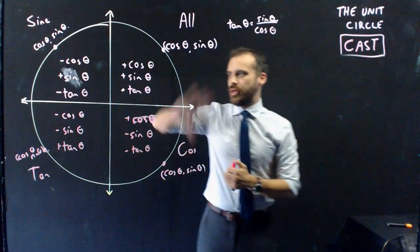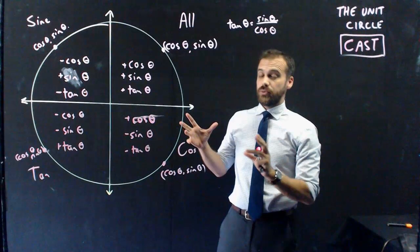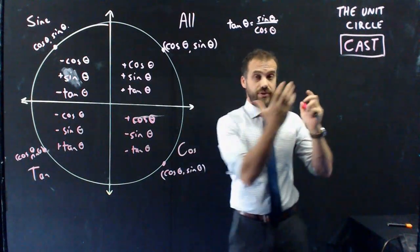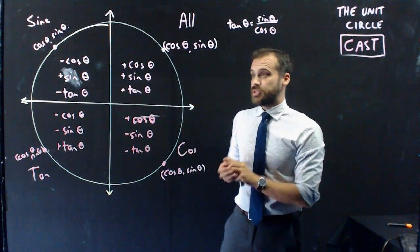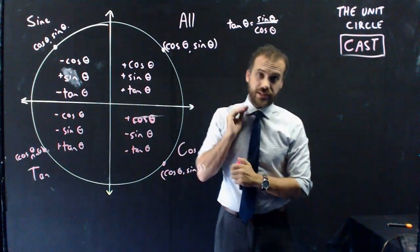So, that's a quick way to figure out whether your answers are going to be positive or negative. We haven't actually done any work yet. I'm just telling you, this is cast. This is how you're going to be able to tell whether things are going to be positive or negative in each of the four quadrants. Let's get to work.